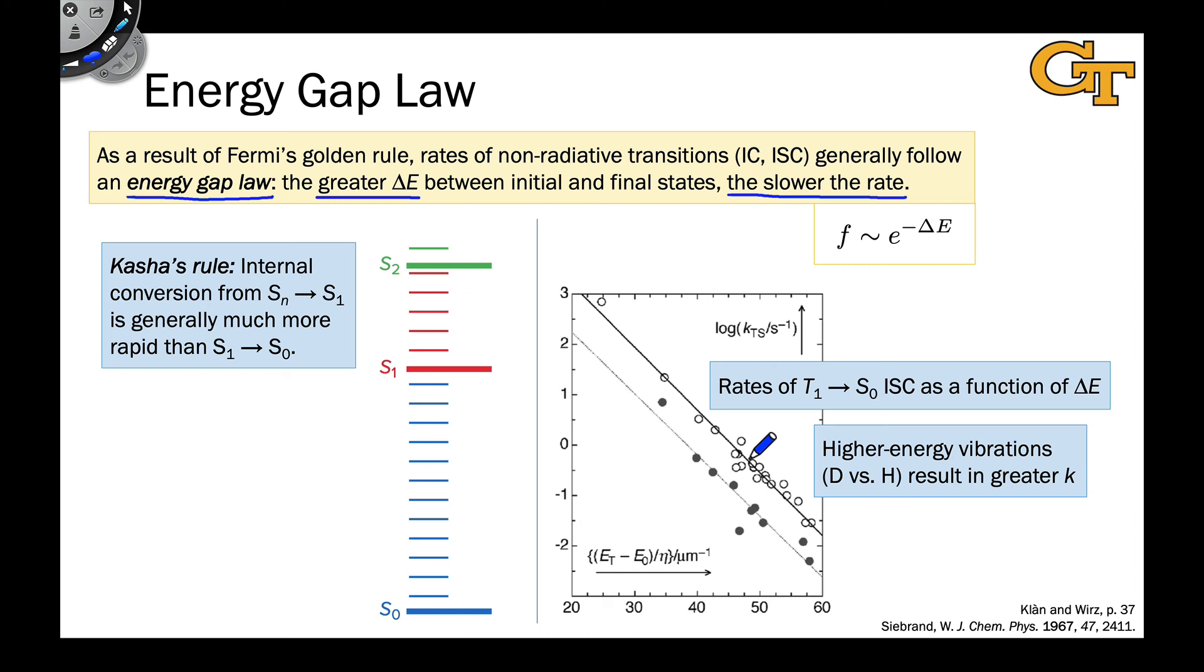Replacing hydrogen with deuterium caused an increase in the rate across the board, pretty much, of T1 to S0 intersystem crossing. And this was attributed to the fact that the CD bonds are stronger than the CH bonds and their vibrational frequencies are higher. As a result of that, it takes fewer vibrational quanta to match the energy of the S0 state to the ground vibrational level of the T1 state.